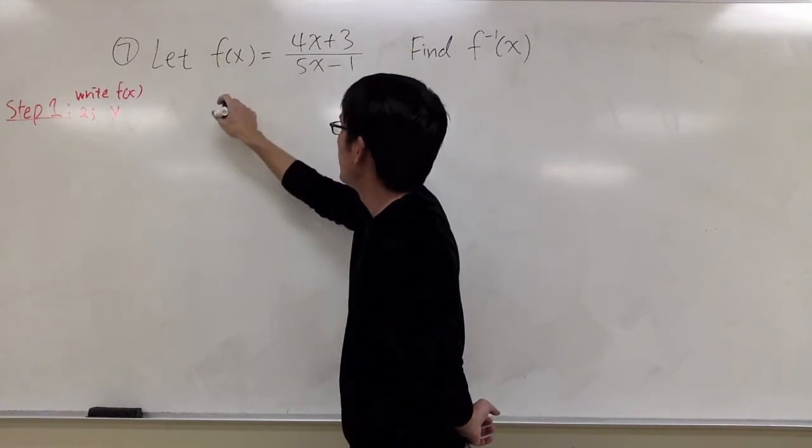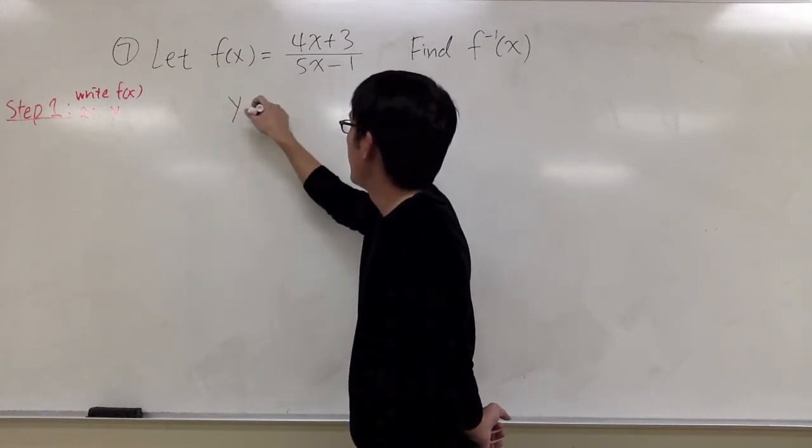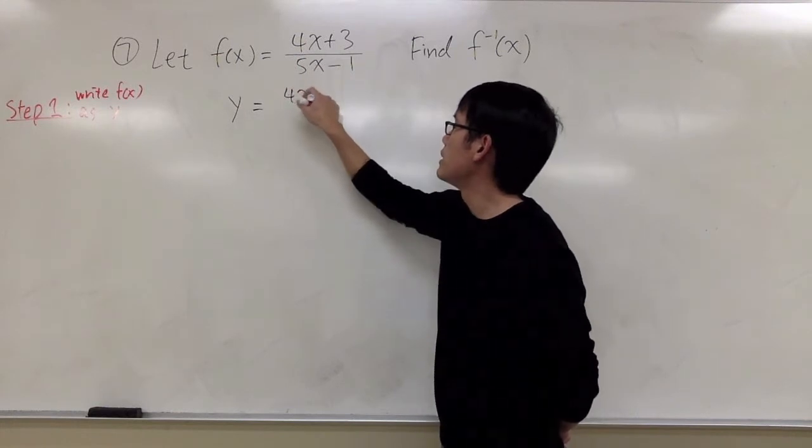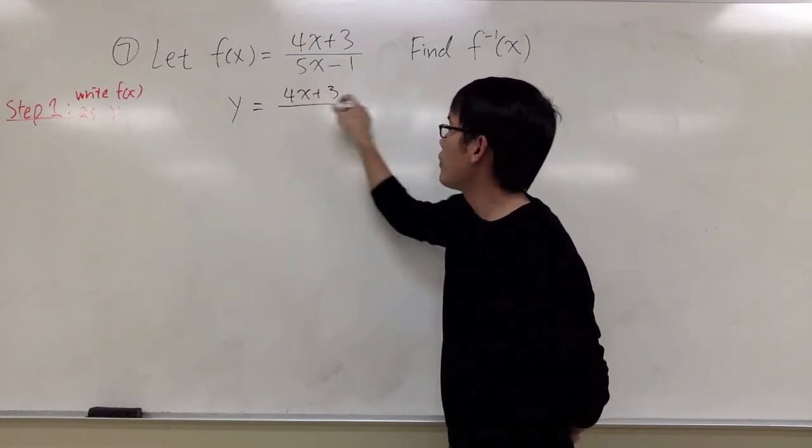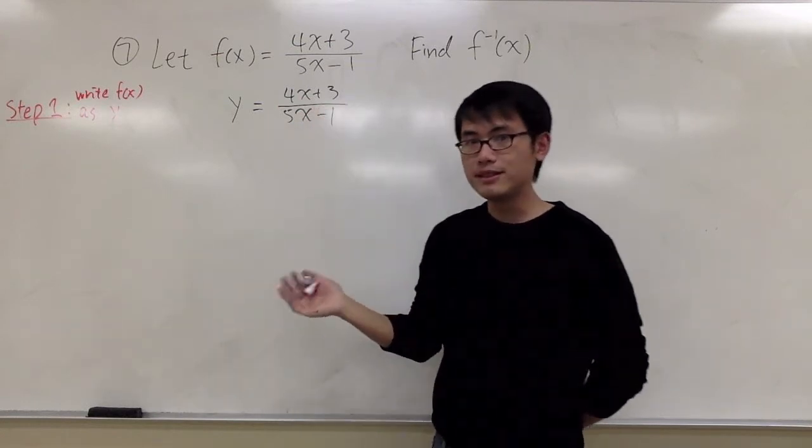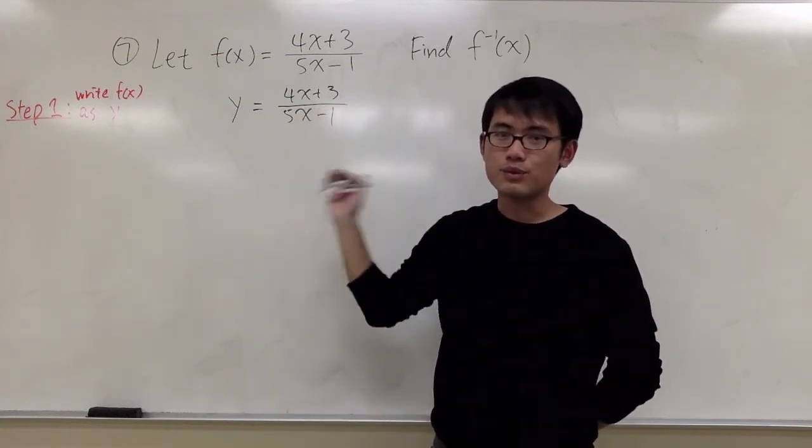So I see f, I will replace that with y and I will have 4x plus 3 on the top over 5x minus 1. So the first step is just to write f as y.